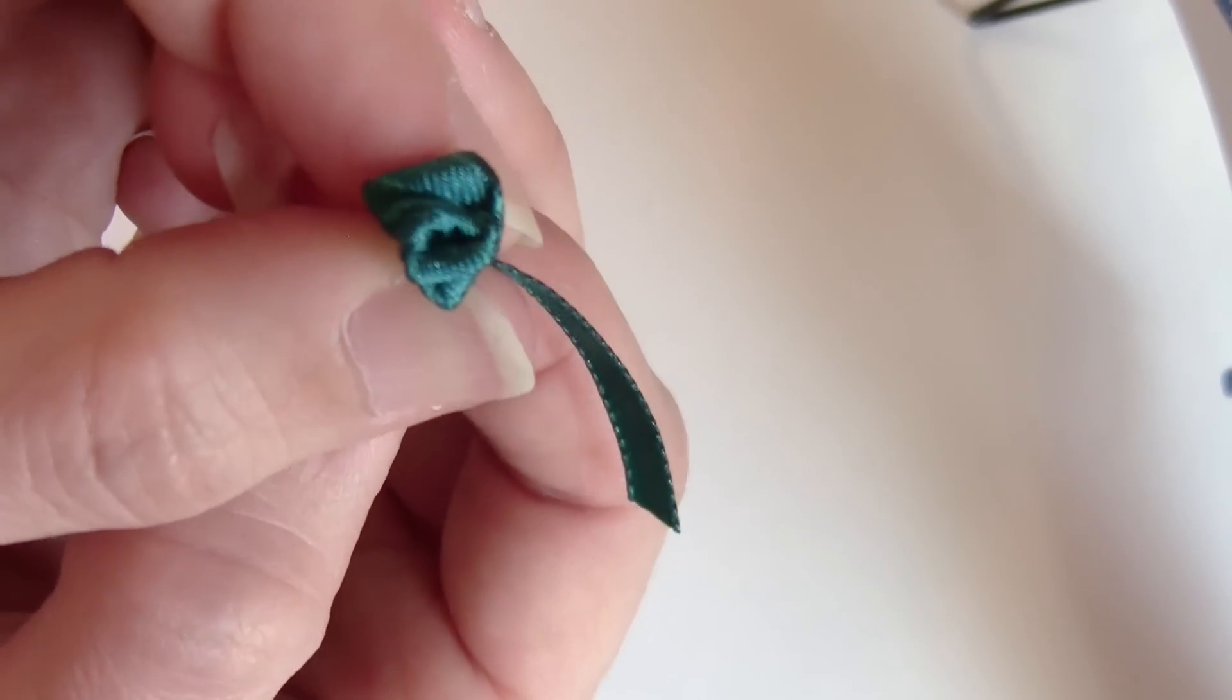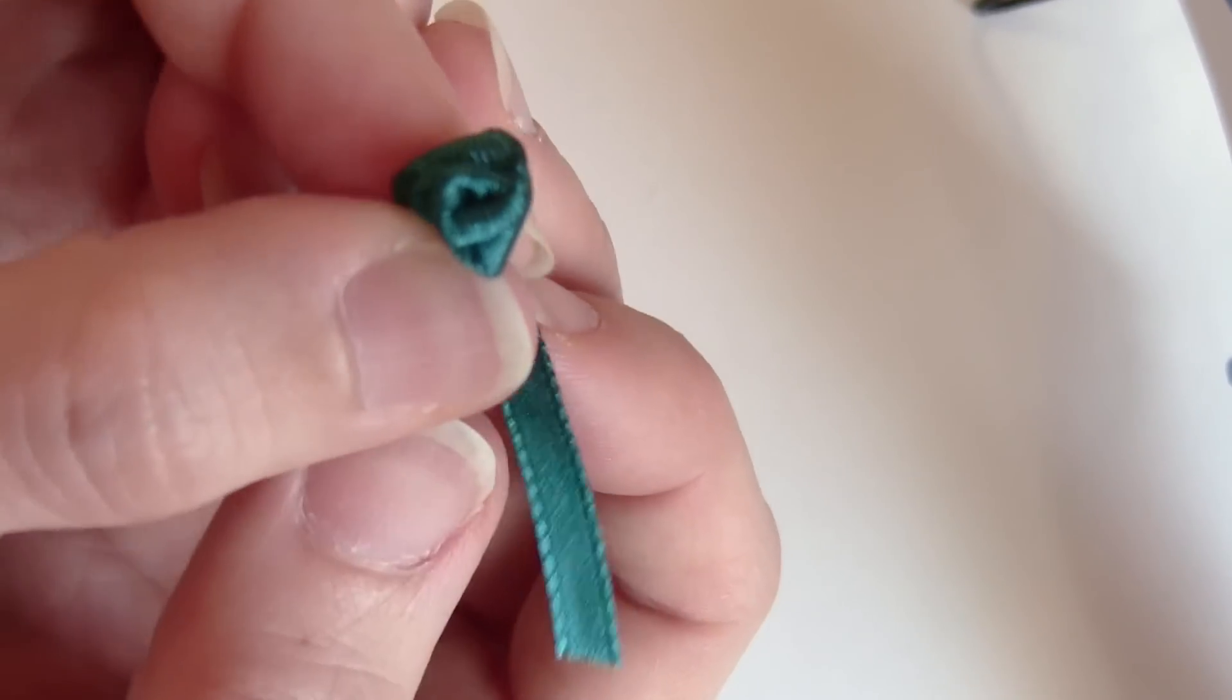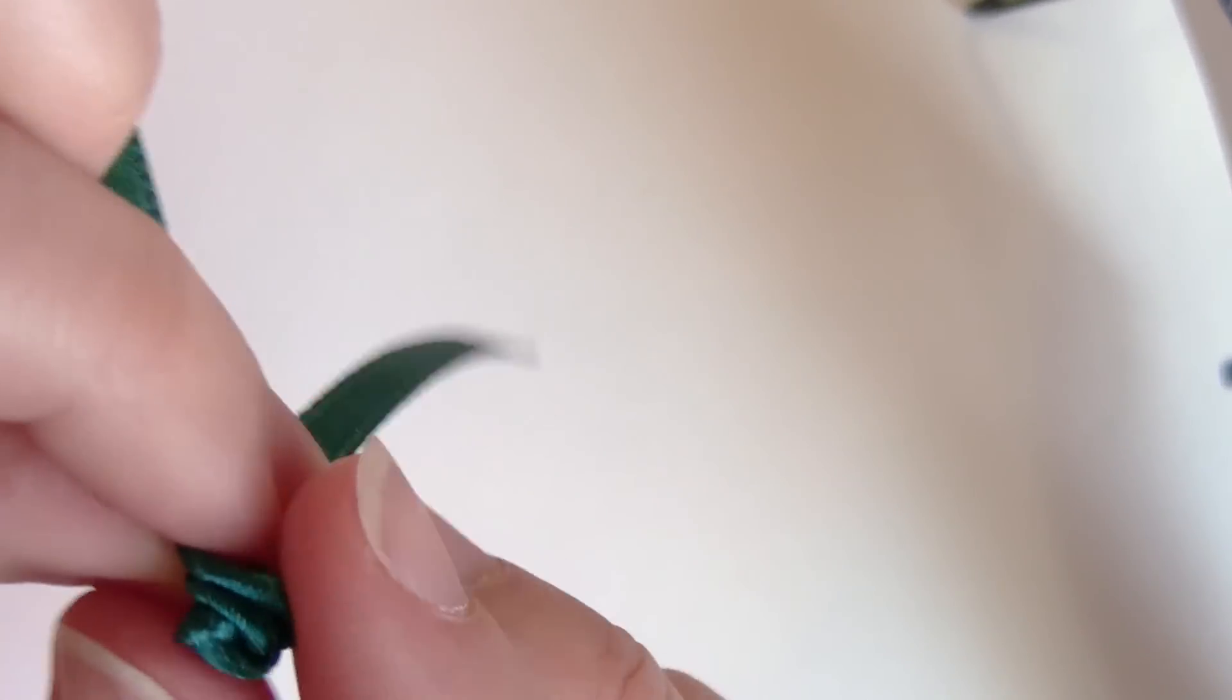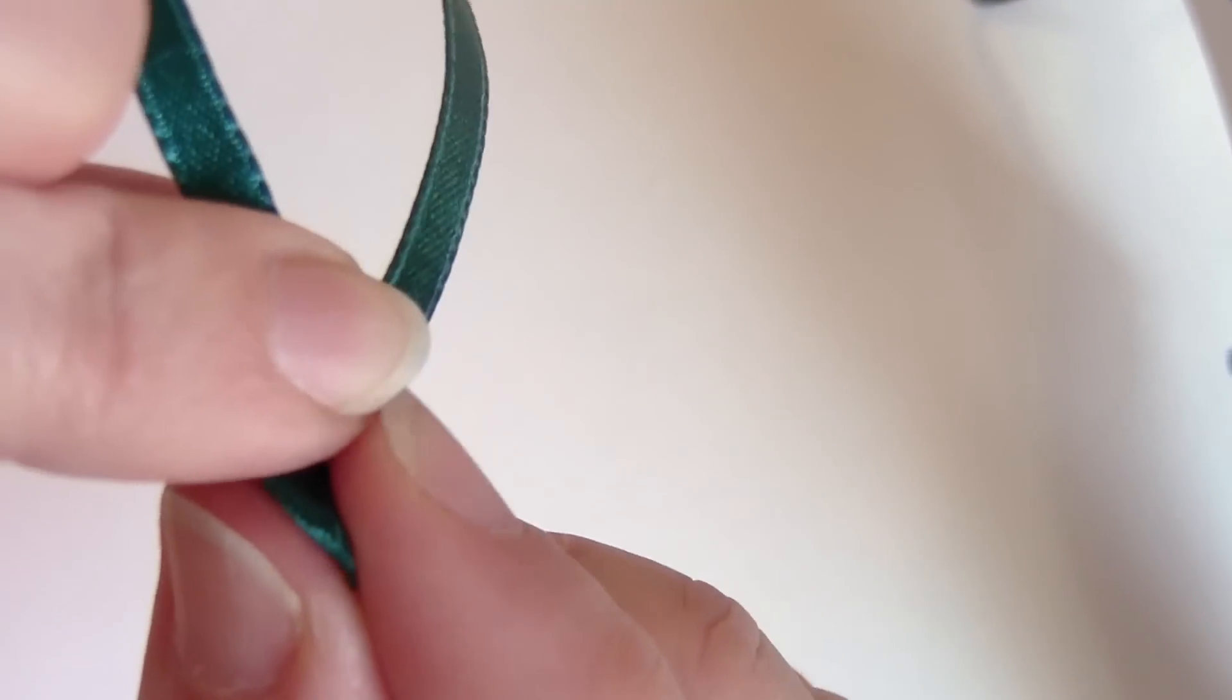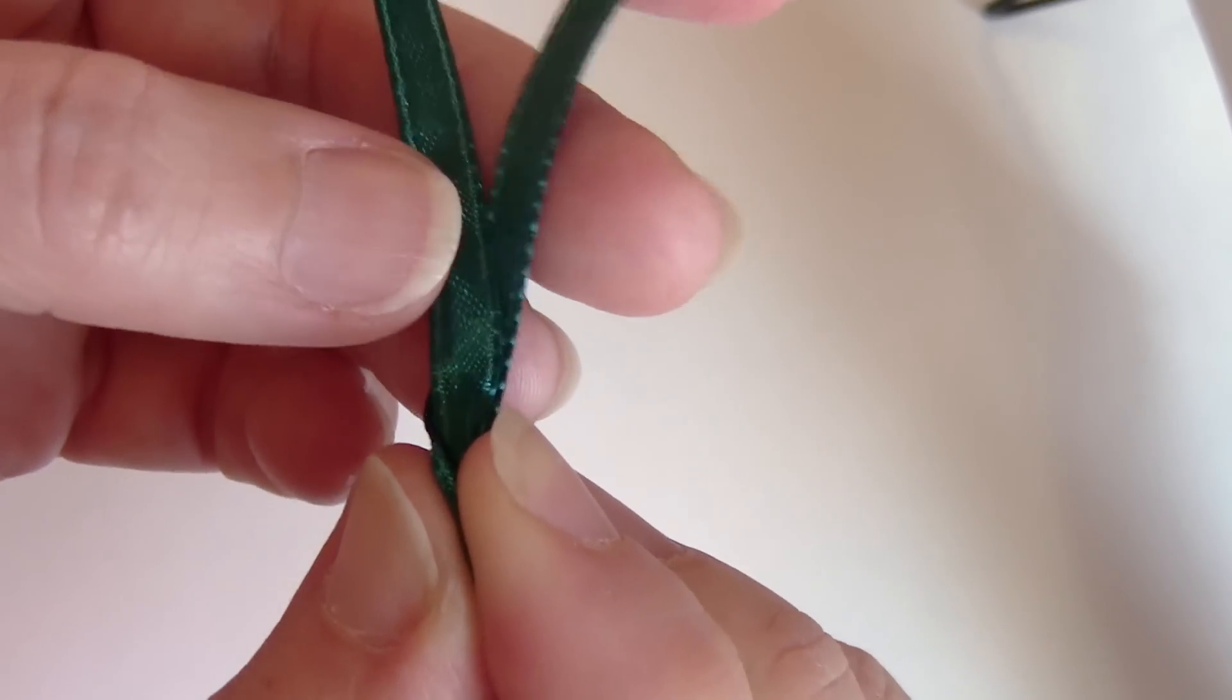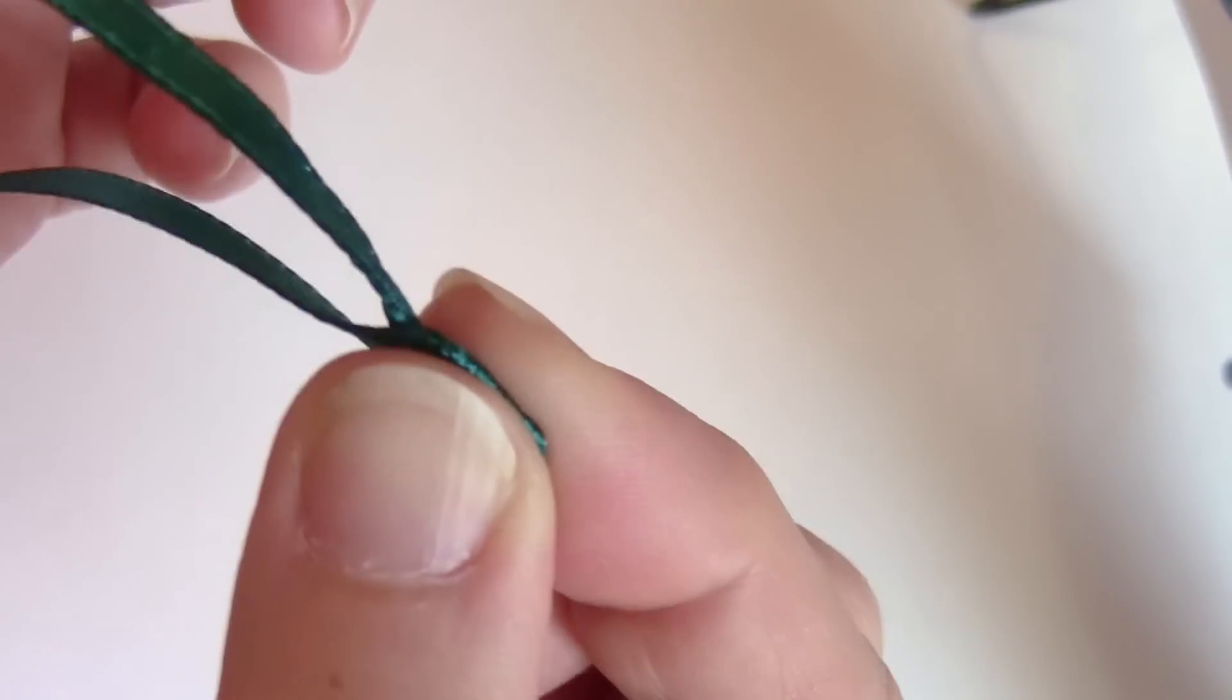Pull until I have a rose-like shape going on, and then I'm going to hold the rose like this and kind of squish it down in my fingers. I'm going to knot the ends, and when I knot, I am not going to do it too tightly. If you pull too tightly, you will pull the rose out.